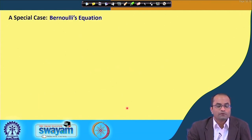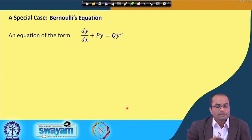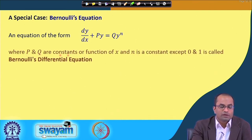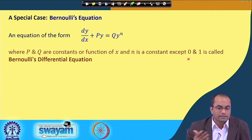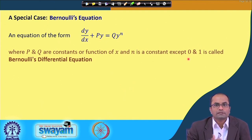A special case is the Bernoulli equation, of the form dy/dx + P·y = Q·yⁿ, where P and Q are constants or functions of x, and n is a constant other than 0 and 1. This is a special case of the reducible equation idea and can be converted to a linear equation by an appropriate substitution.